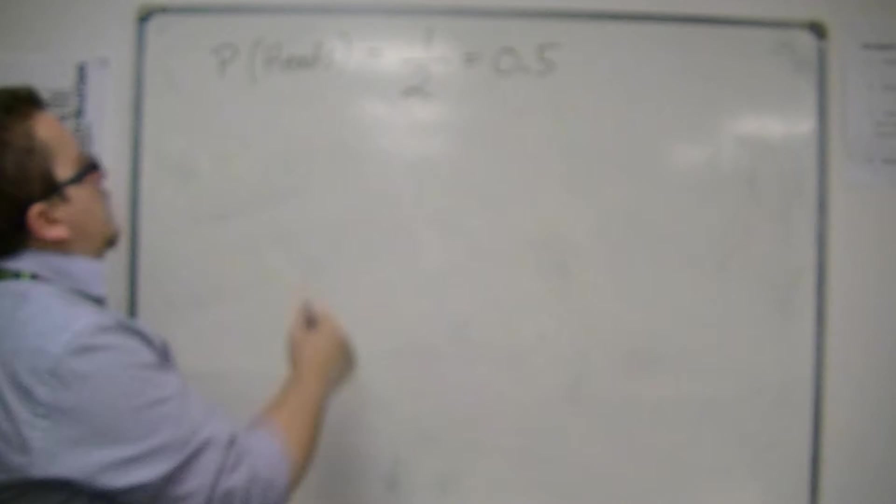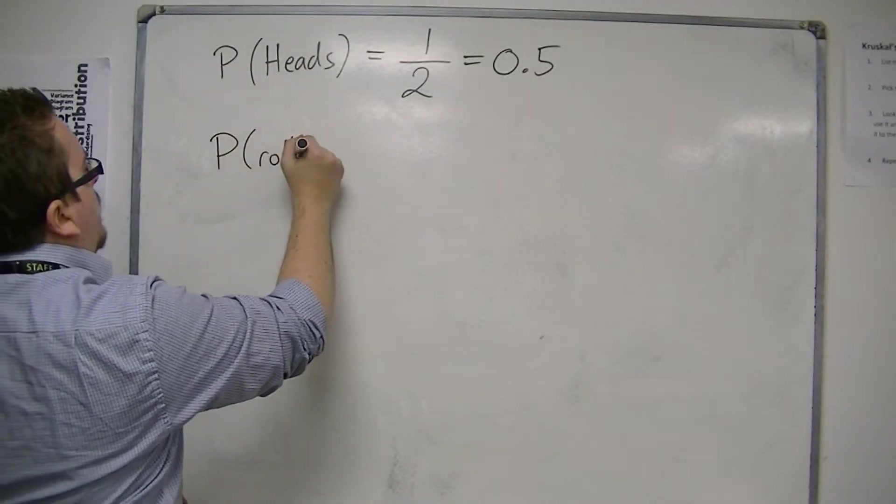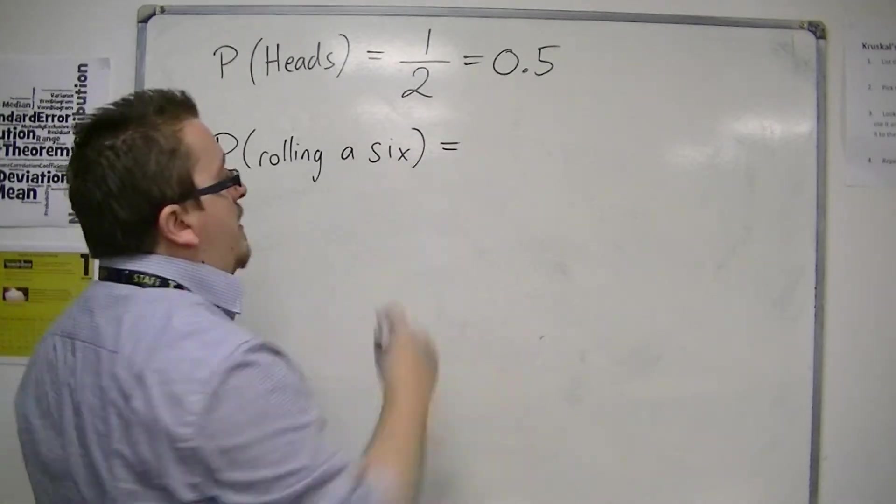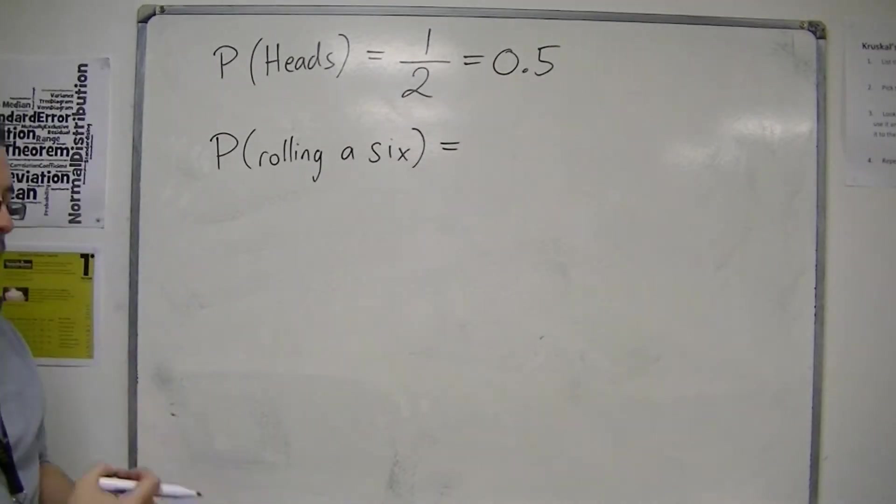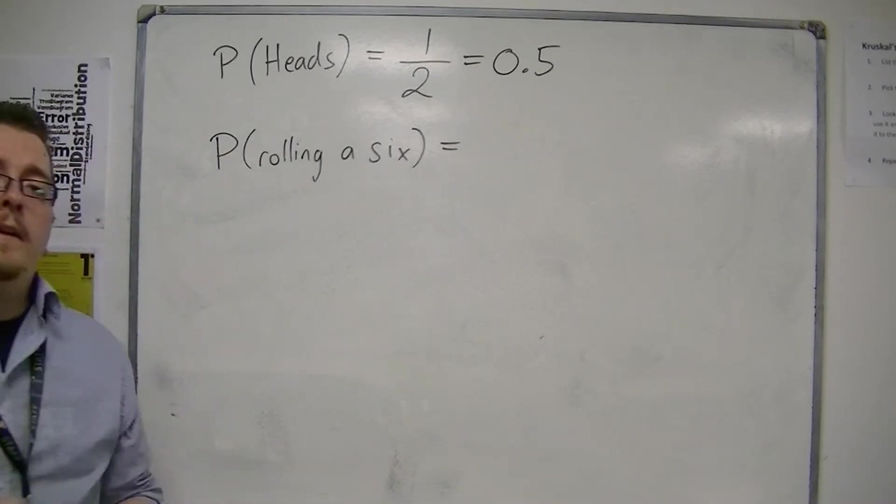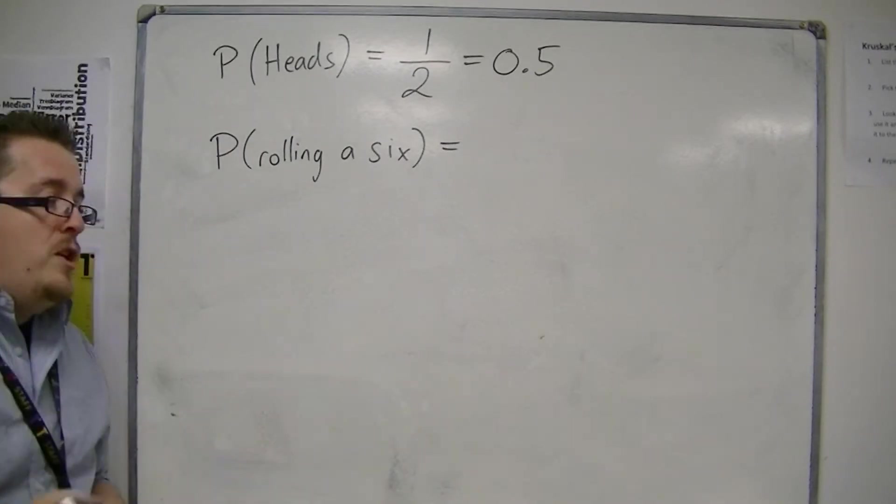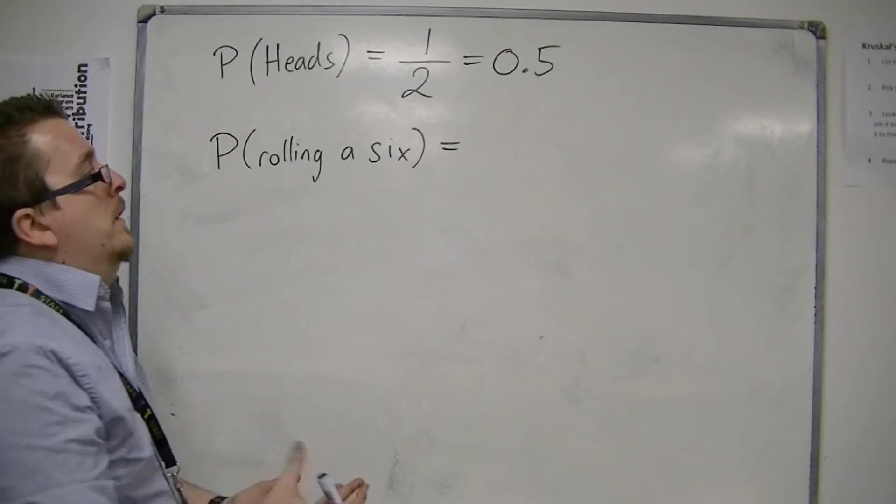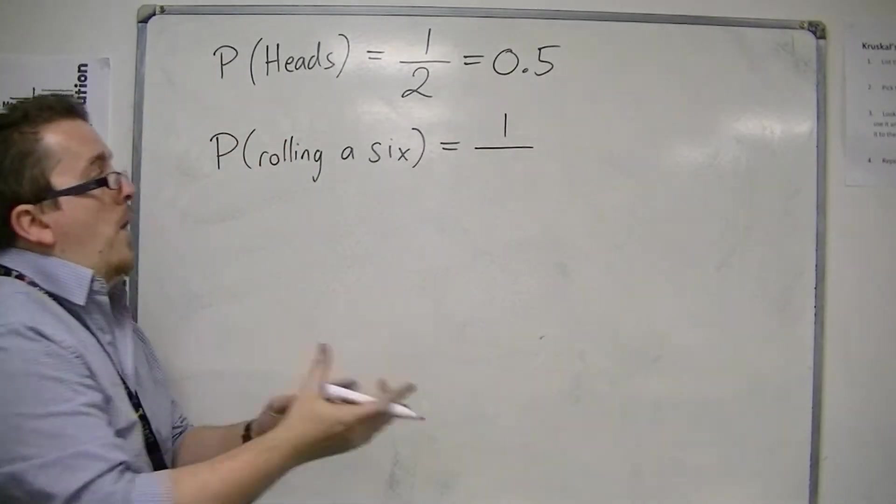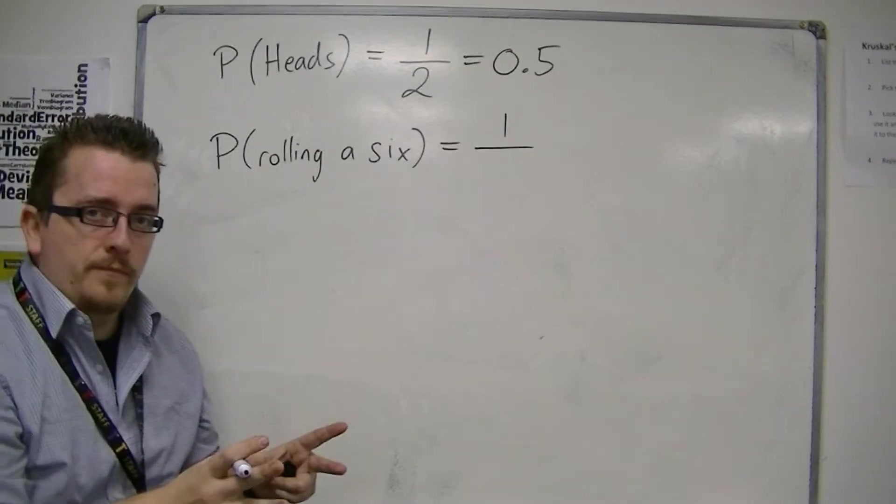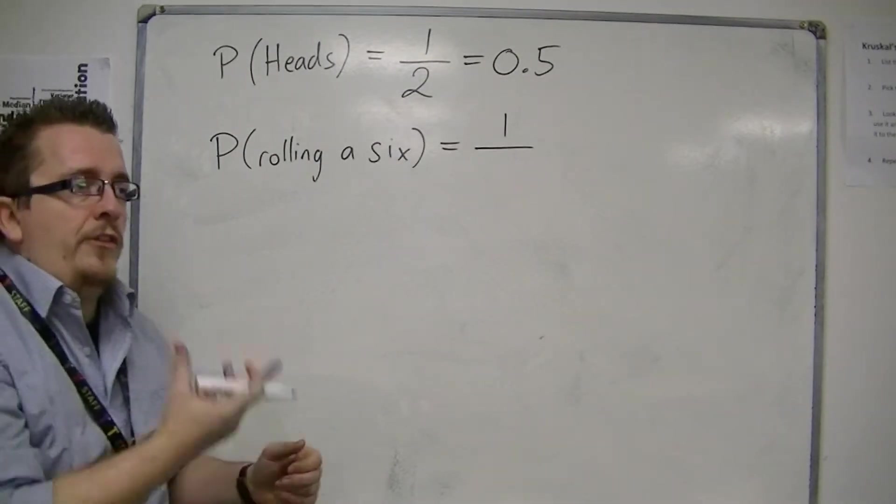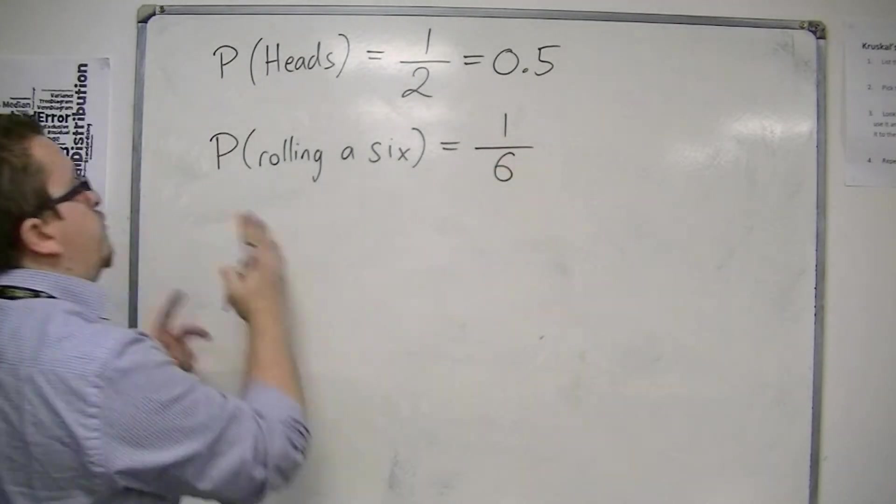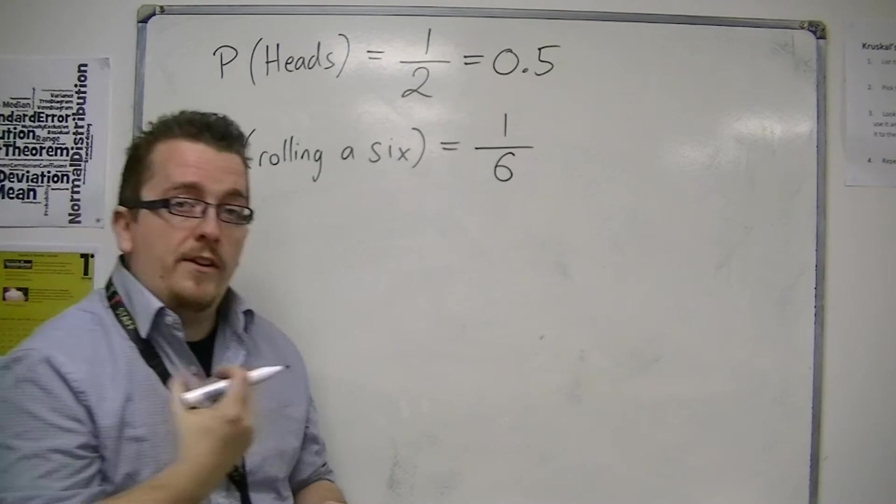How about the probability of rolling a 6 on a normal die? So on a fair die, rolling a 6, then there's only one 6 on the 6 faces. So I only have one possible way of winning, but there are 6 possible numbers that could come up, 1 to 6. And so the probability of rolling a 6 would be 1 out of 6.